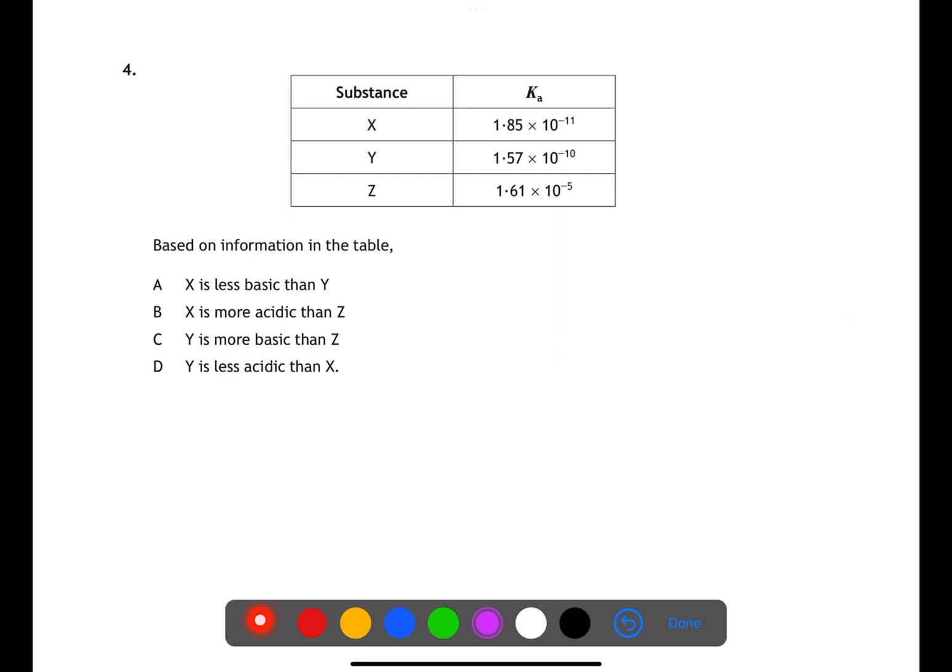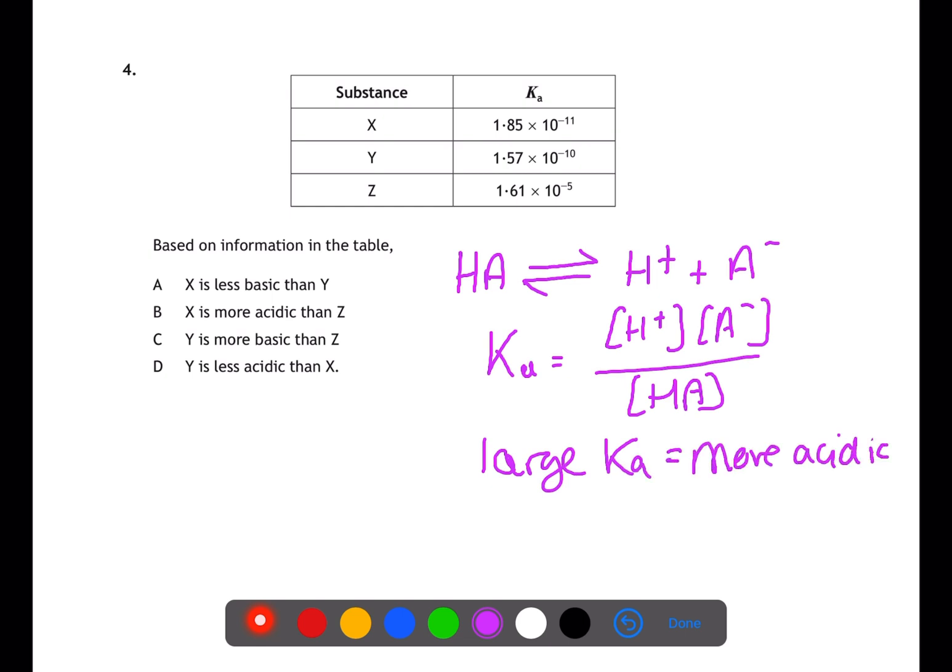For question 4 we're looking at acids. If we write our equation for a weak acid of HA in equilibrium with H plus and A minus ions, the expression for KA will be H plus times A minus divided by HA. This means that for a larger KA you have a more acidic substance. Therefore X is the least acidic substance in the table and Z is the most acidic substance. We can see that Y is more basic than Z therefore C is the answer.